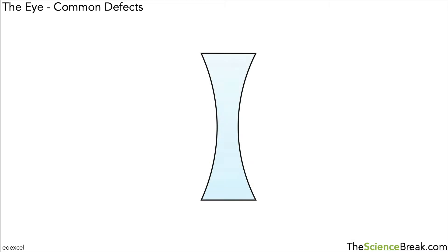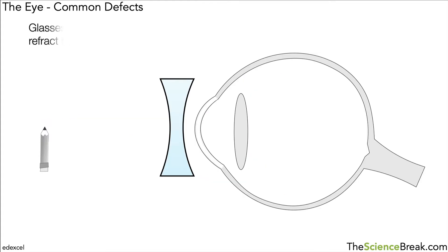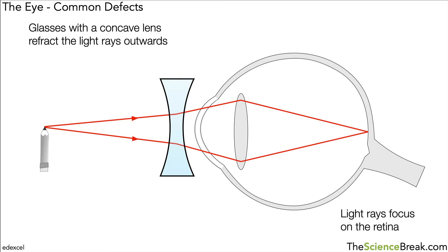This is called short-sightedness, and the solution is to use a different kind of lens in glasses — a concave lens. A concave lens refracts light rays outwards. So with glasses containing a concave lens, the light rays are refracted outwards, and then the eye's lens refracts them as normal so they focus on the retina. Before they were focusing in front; now they will focus on the retina, giving us a sharp image.